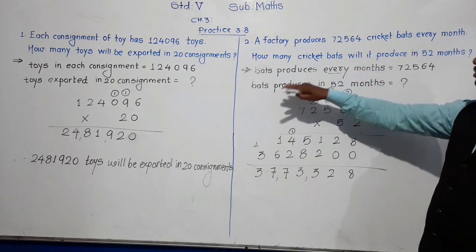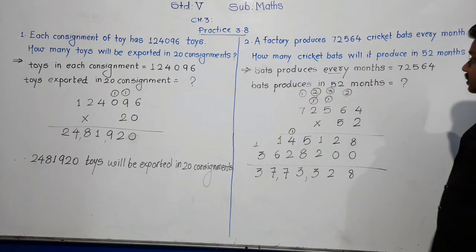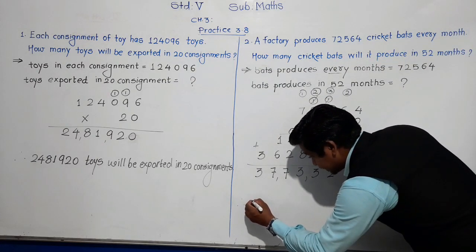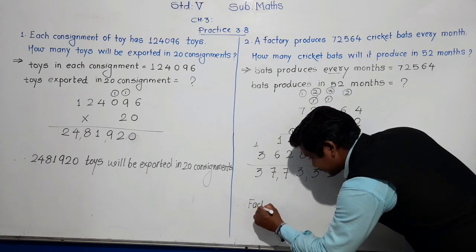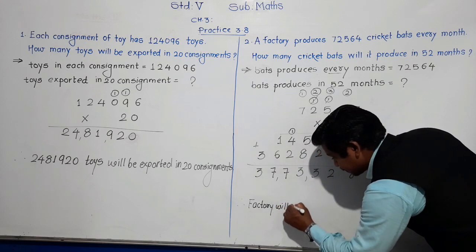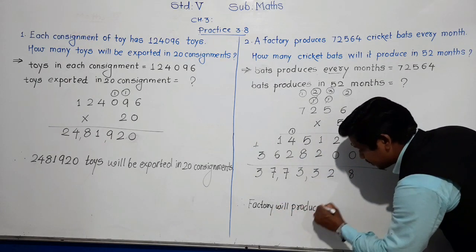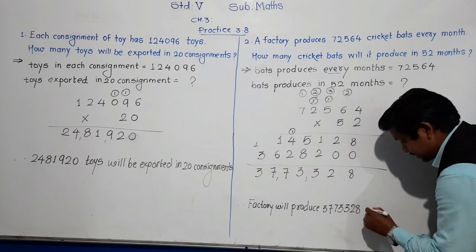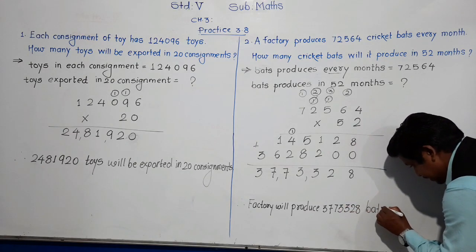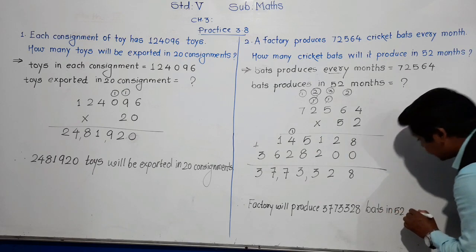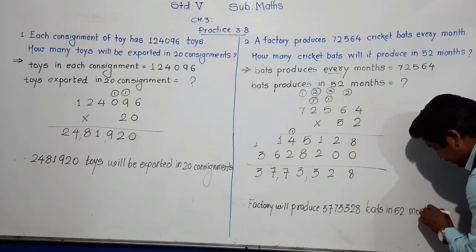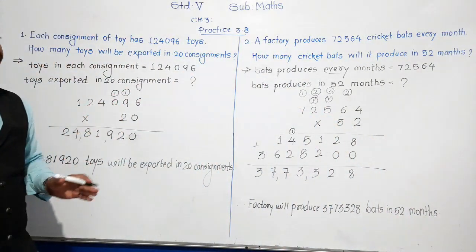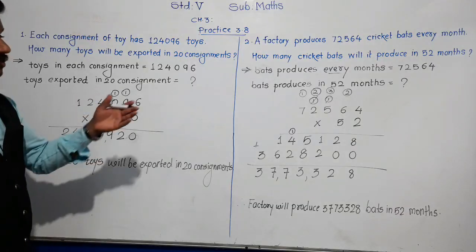So 37,73,328 bats will be produced in 52 months. Pause this video and write these two problems in your notebook. We will move towards the next problems.